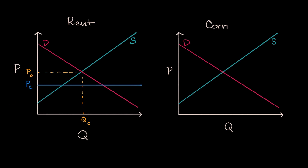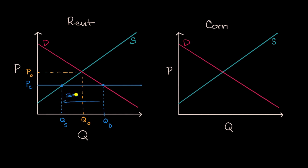Now what's going to happen here? Well, if this is the price ceiling, then right over here is the total amount of square footage — the quantity of square footage — that landlords or building owners are willing to supply. But at this price, you have a much higher quantity that is being demanded. When the quantity demanded at a price is higher than the quantity supplied, you have a shortage. So this right over here is describing a shortage.